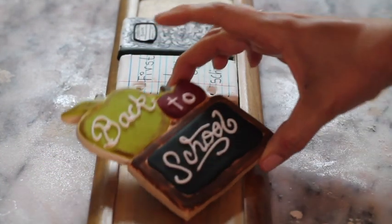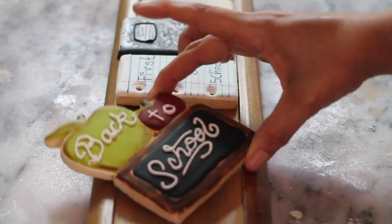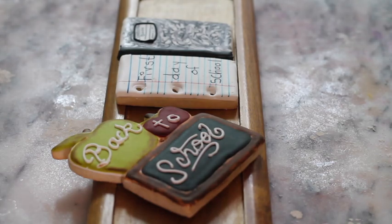And this is another cookie that I make also using the same rectangle. I make like a little blackboard and I put some apples on the top.